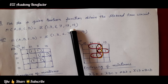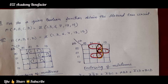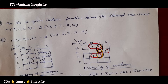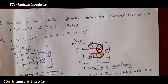In our previous class we have seen what is hazard, what are the different types of hazards, and how to make a circuit hazard free — that is by enclosing the nearby ones we can make the circuit hazard free. Hazard is an unwanted switching transient which appears at the output of a combinational circuit, occurring due to different propagation delays at different paths. This hazard will cause malfunctioning of the circuit, so it is necessary to avoid hazard.